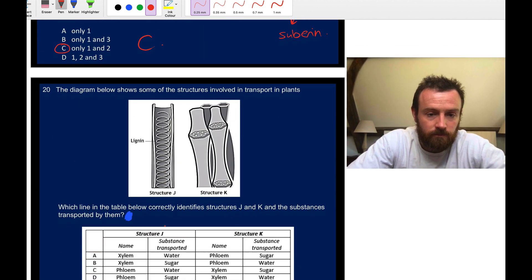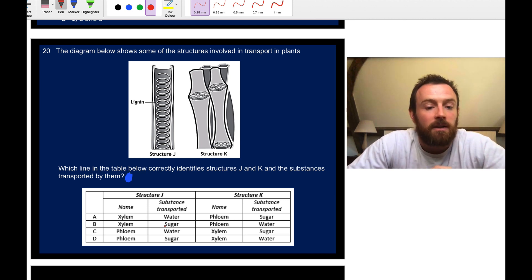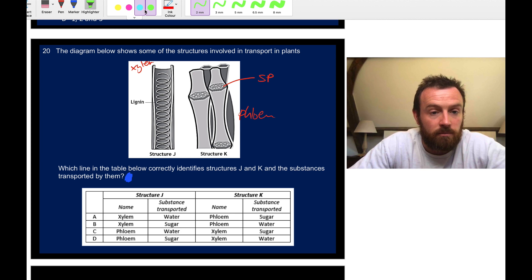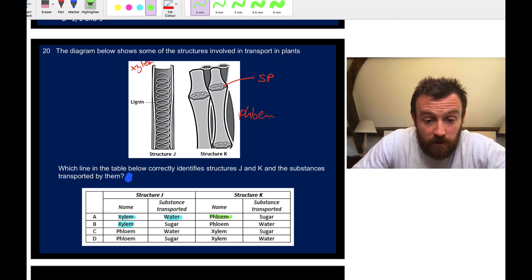Last question: do this question if you need to. Which line in the table below correctly identifies structures J and K? Well, J is xylem. We know that because it's a continuous tube and it's got this spiral thickening with lignin. Only the xylem have lignin. We can see the sieve plate there and the elements there, so this is phloem. Structure J is xylem and it transports water. Structure K is phloem and it transports sugar or assimilates. So the answer is therefore A.